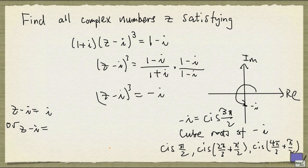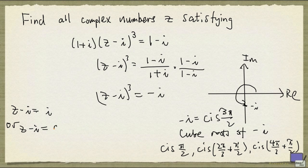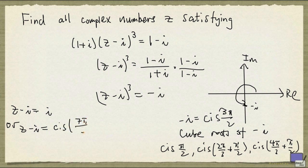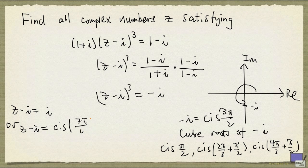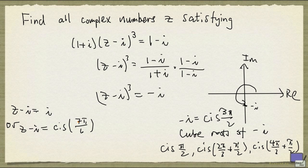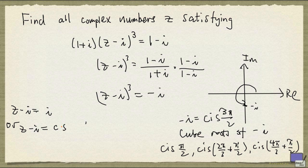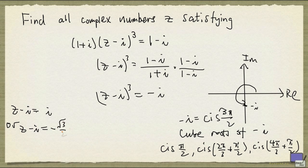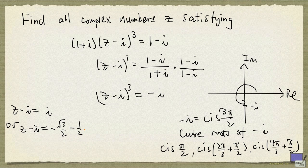Or z minus i equal to the second cube root, which is cis of 7pi over 6. But the cosine of 7pi over 6 is minus square root of 3 over 2, and sin of 7pi over 6 is minus 1 half. So this can be written as minus square root of 3 over 2 minus 1 half i.